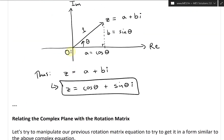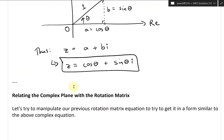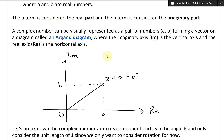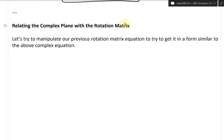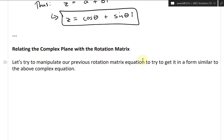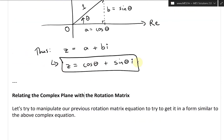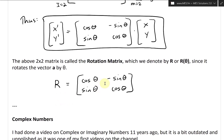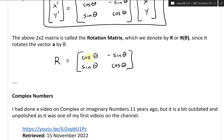Now that we have the unit complex number written using these components — cosine theta and sine theta — we've covered the rotation matrix. So now let's relate all of them together. We'll be relating the complex plane, which is basically the set of all complex numbers, with the rotation matrix. Let's try to manipulate our previous rotation matrix equation to get it in a form similar to the complex number equation. Here R equals cosine theta — this is the matrix.